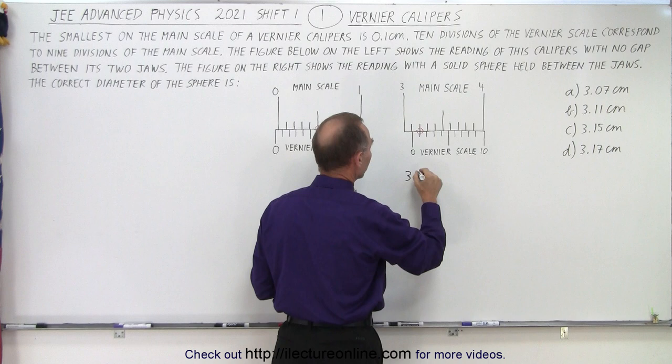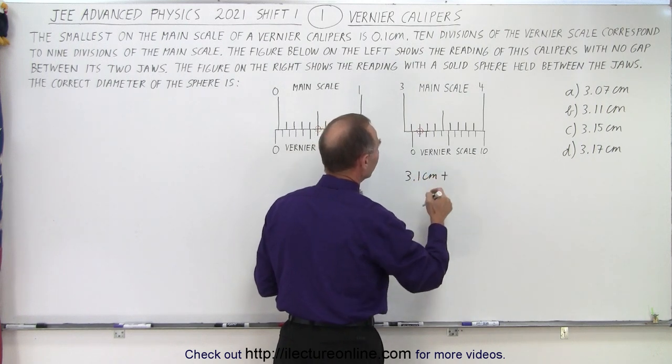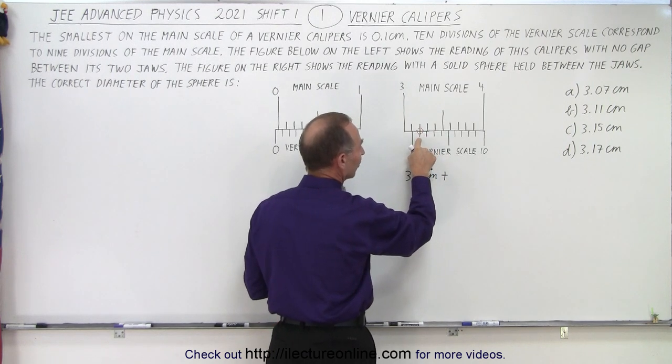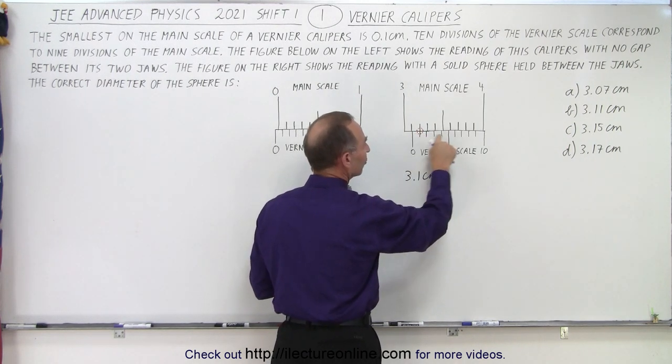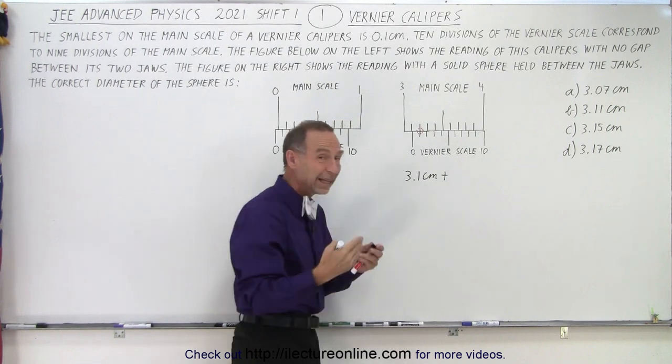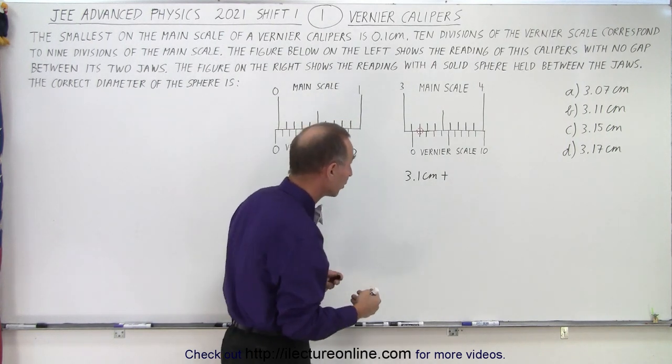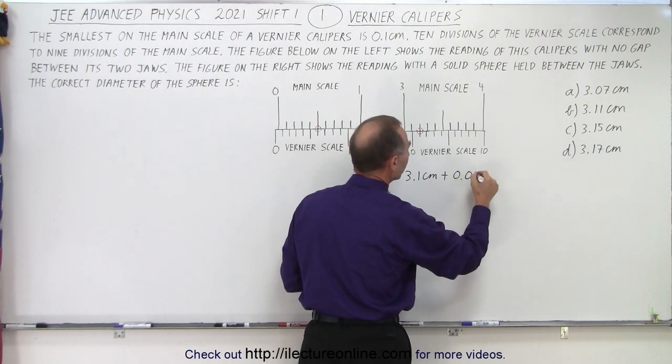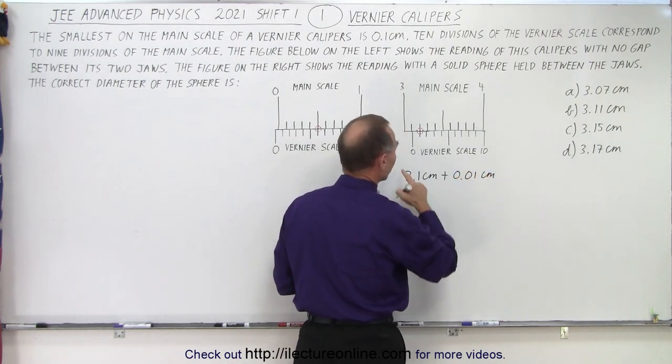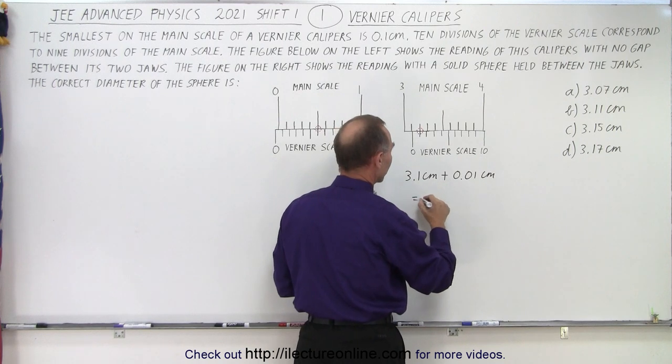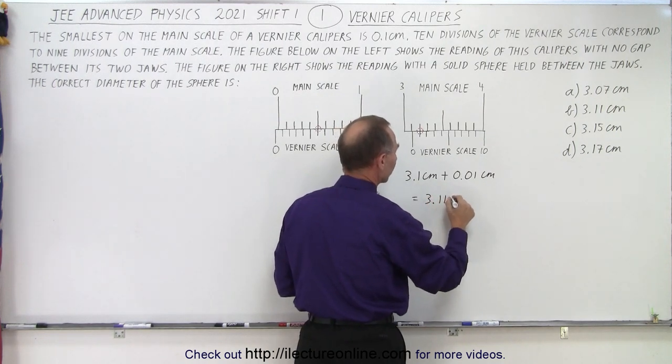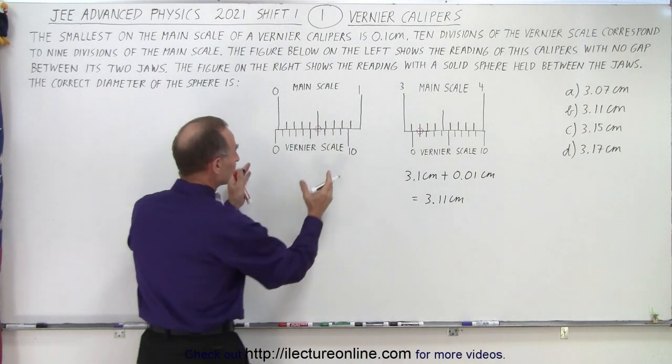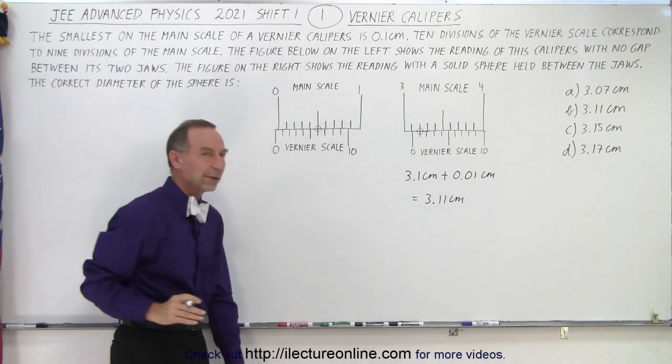So we have 3.1 centimeters plus wherever the bottom line matches up with the top line. Notice that this is the first line right here. This scale here represents one tenth of a millimeter or one one hundredth of a centimeter, and so we have to add one one hundredth of a centimeter. So the reading we get on the right scale is going to be 3.11 centimeters, and sure enough that's one of the answers there, but that's not the correct answer because we have to adjust it for the zero reading.